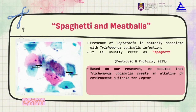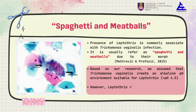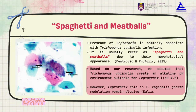Based on our research, we assume that Trichomonas vaginalis creates an alkaline pH environment suitable for Leptothrix. After colonization, Trichomonas modifies the vaginal environment, including a fall in Lactobacilli, and creates a pH greater than 4.5 that supports further Leptothrix growth and proliferation. This fall in Lactobacilli may be due to Trichomonas vaginalis-mediated Lactobacilli phagocytosis that destabilizes and challenges the host's protective environment.